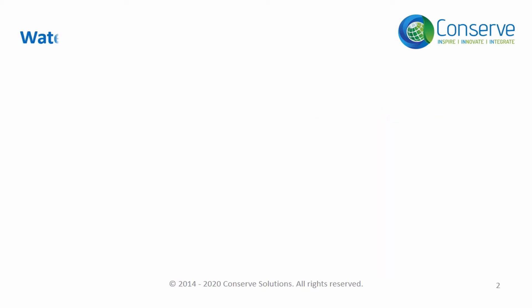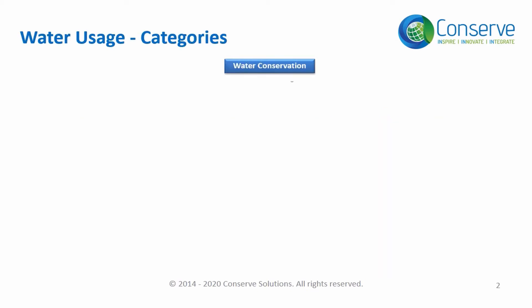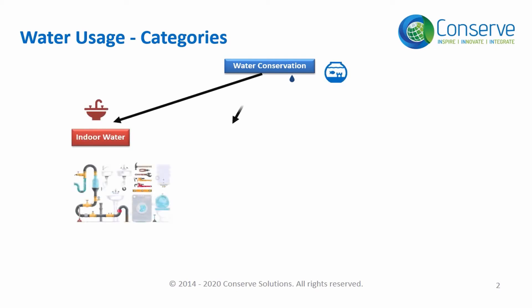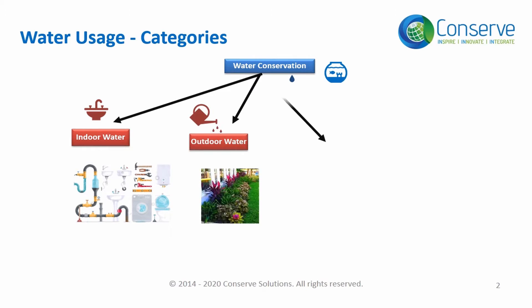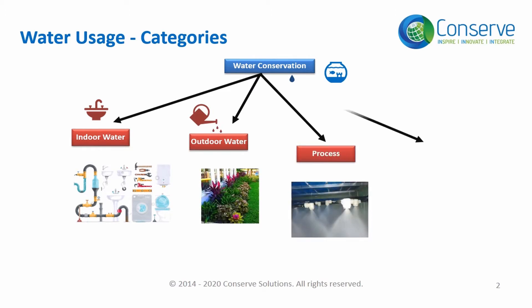Water consumption and water conservation can be addressed in four areas: number one, indoor; number two, outdoor; number three, process; and number four, metering.